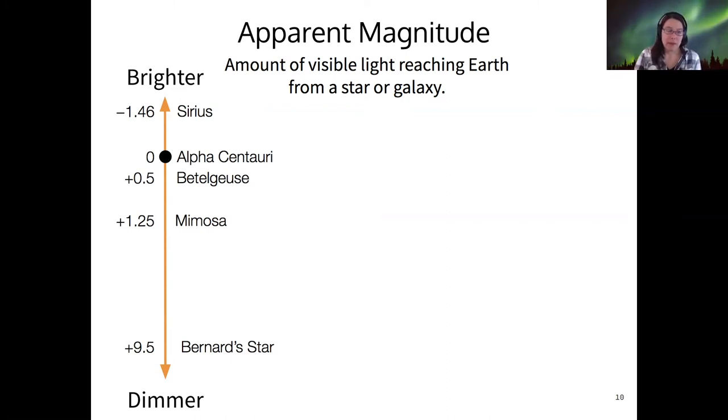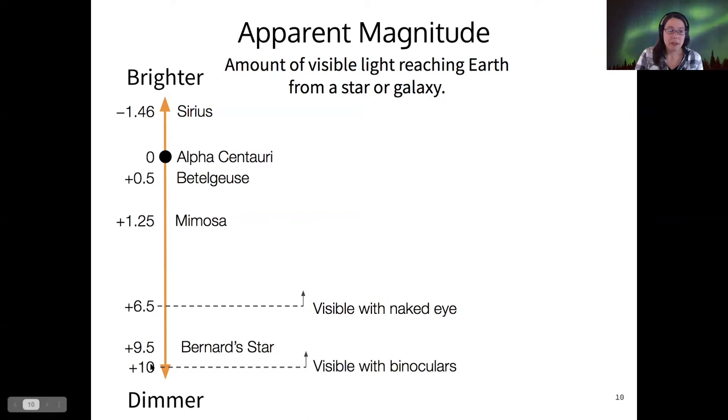And there are a couple of cutoffs here on this magnitude scale. One of them is the magnitude of 6.5. And toward the negative end of the scale, those are visible with the naked eye. And then magnitude 10, which is dimmer than magnitude 6.5, those are only visible with binoculars. And you could draw more cutoffs if you wanted to for stars that are then only visible with telescopes. This orientation of this magnitude scale can seem confusing, but it's just something you have to remember.